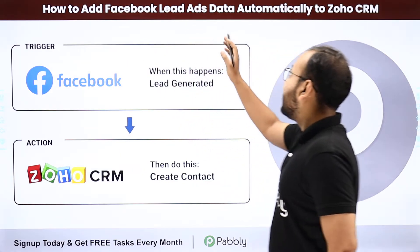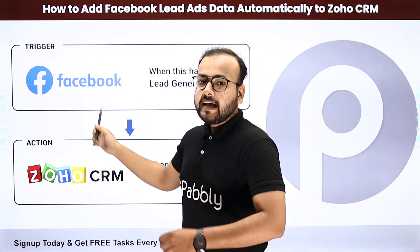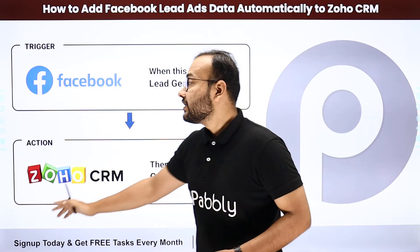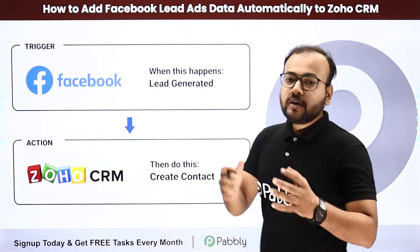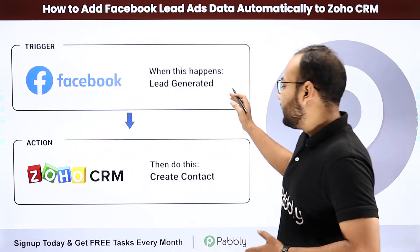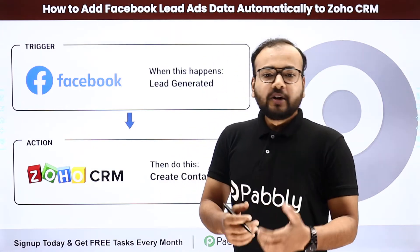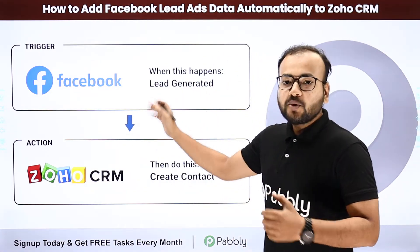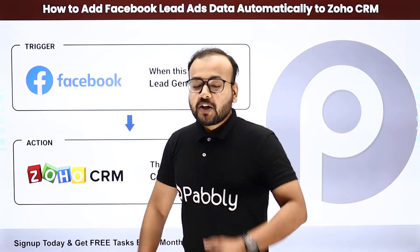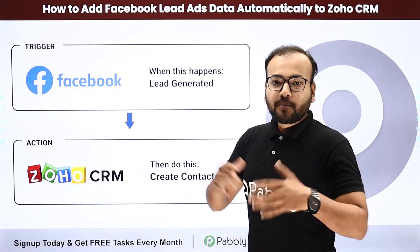The next automation is how to add Facebook lead ads data automatically to Zoho CRM. Here we are connecting Facebook as the trigger application and Zoho CRM as the action application. Whenever you have a new lead generated from your Facebook lead ad, the same lead will be created as a contact in your Zoho CRM automatically. So you don't have to manually copy the data from Facebook and paste it into Zoho CRM — it will save your time and efforts so you can utilize your time in a more productive manner.